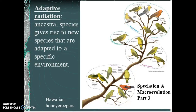Adaptive radiation is part of that — an ancestral species gives rise to new ones adapted to a specific environment. The environmental role is really important to stress. As the environment changes, and it has changed throughout the course of Earth's history, that drives adaptation and speciation. It also leads to extinction. If you can't adapt, your species goes extinct.